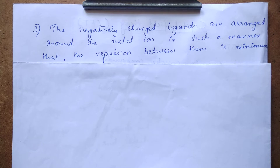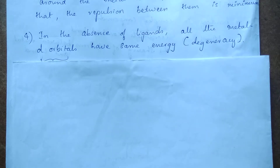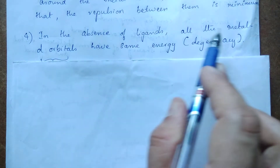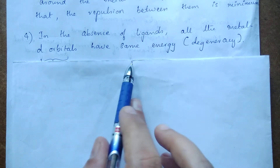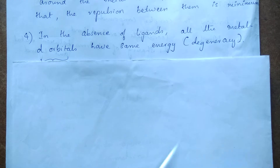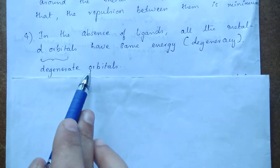The d subshell has five orbitals. In a free metal ion — one not surrounded by any ligands — all five d orbitals have the same energy. This condition of having equal energy is called degeneracy, and the orbitals are said to be degenerate d orbitals.